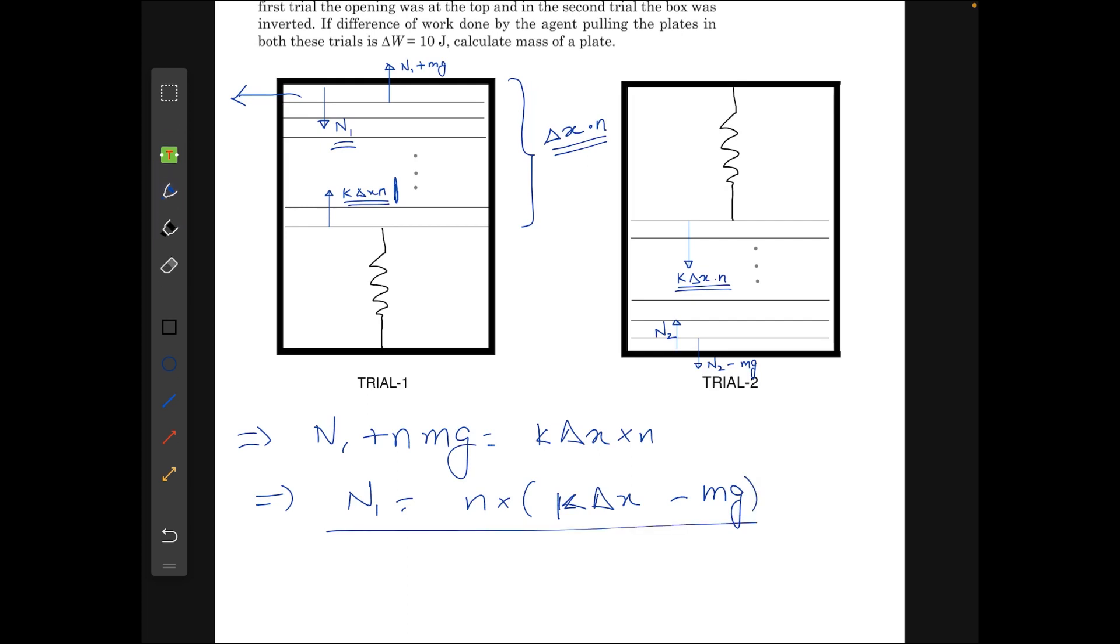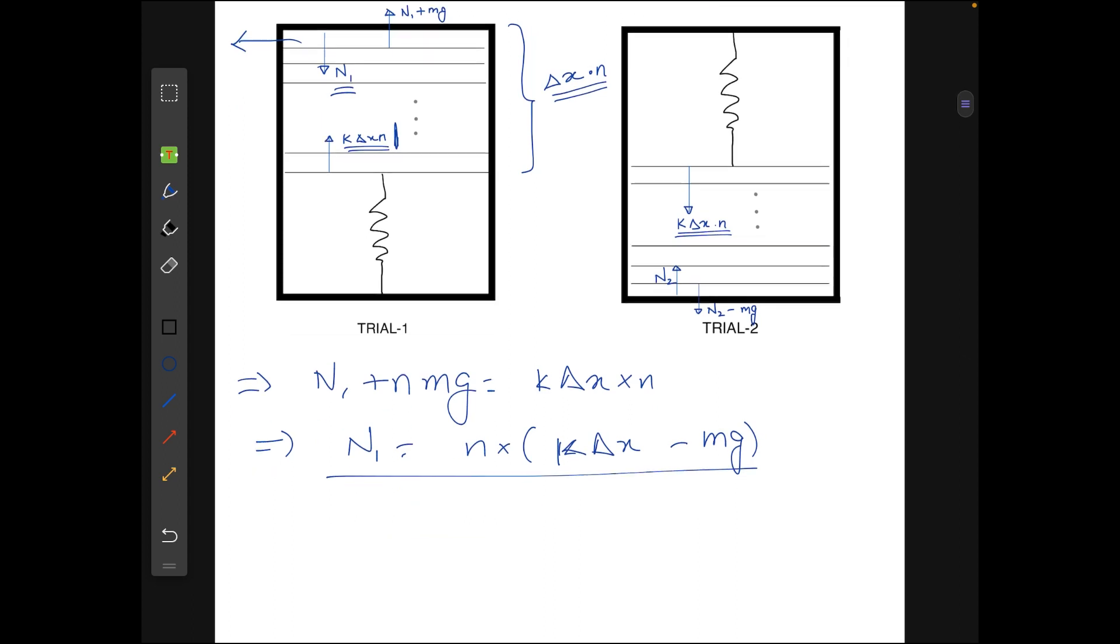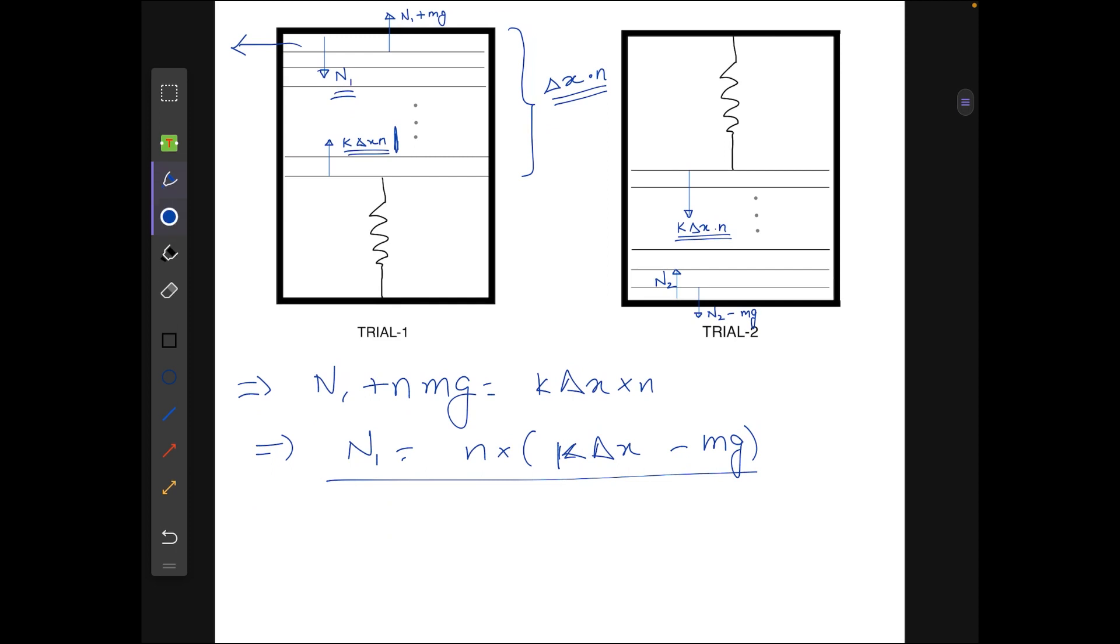Now while removing plate 1, the forces on it will be mu n1 and mu times (n1 plus mg) which is at the top surface of the first plate and at the bottom surface of the first plate. So the work done in removing the first plate will be equal to mu times (n1 plus n1 plus mg) times l. l is the distance or edge length of the plate, the distance which will have been travelled by it. So it will give us mu times 2n1 from the above.